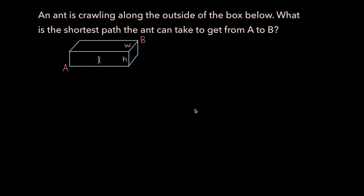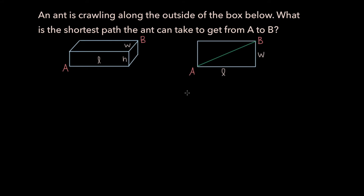Let's start by simplifying the problem. Say we had a two-dimensional surface like a rectangle with length L and width W, and the ant had to travel from point A to point B. In this scenario, the shortest possible path is the diagonal from A to B. Applying the Pythagorean theorem, the shortest distance sd equals the square root of L squared plus W squared.